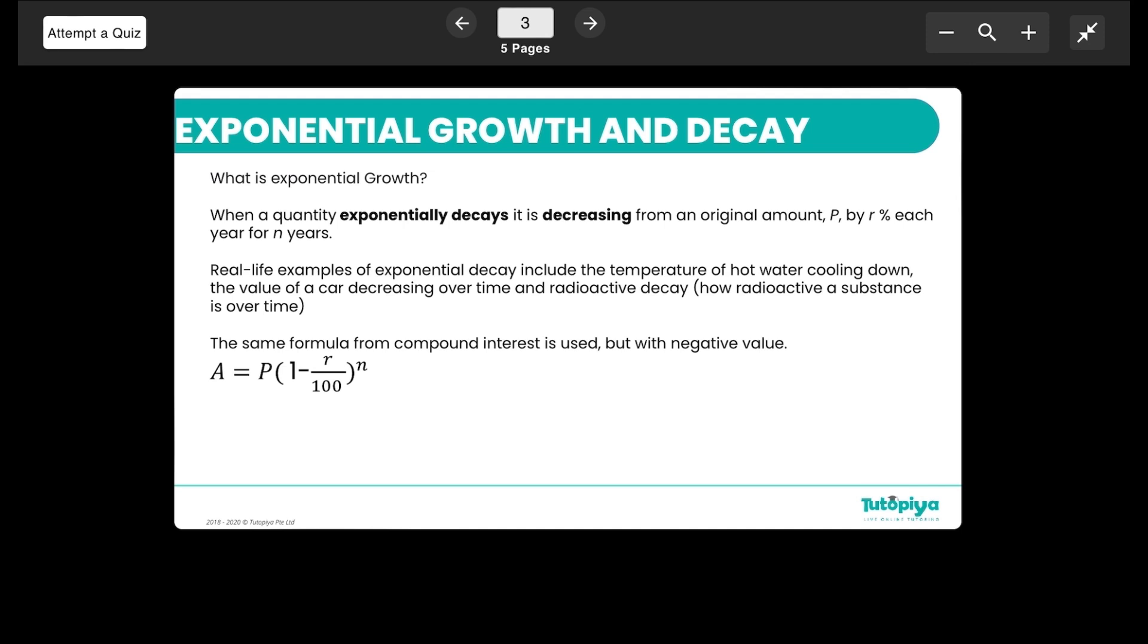Moving on we have decay. Exponential decay is basically decreasing from the original amount for n number of years and the only difference that you will see here is that this sign is basically a subtraction and it's an addition if it is an exponential growth case.